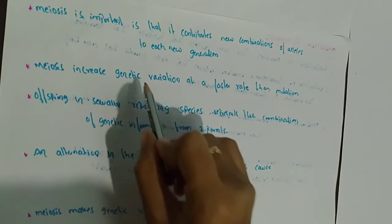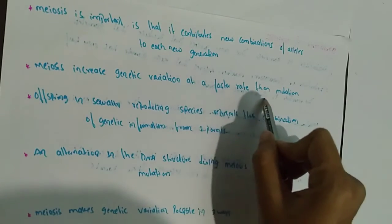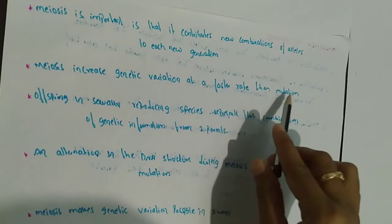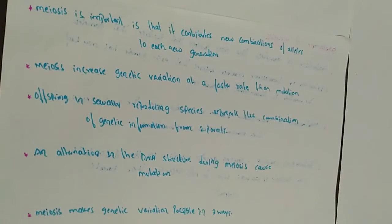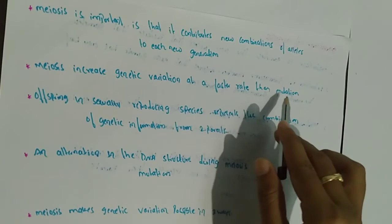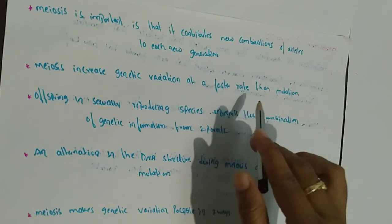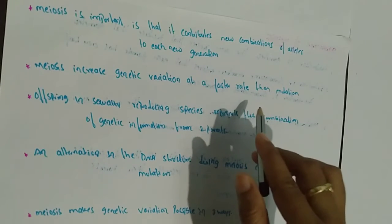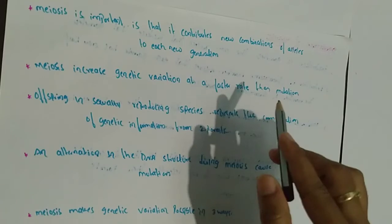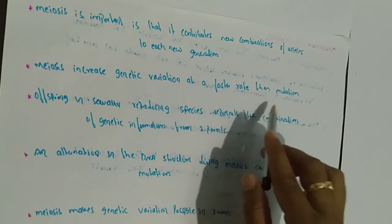Meiosis increases genetic variation at a faster rate than mutation. Genetic variation refers to differences between individuals. Mutation occurs when a DNA gene is damaged or changed in such a way as to alter the genetic message carried by that gene.